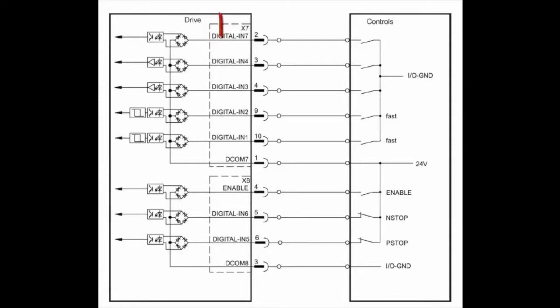Another confusing point is that connectors X7 and X8 are not connected together internally. X7 pin 1 marked DC COM, digital common, and X8 pin 3, also marked DC COM or digital common, are not connected together.